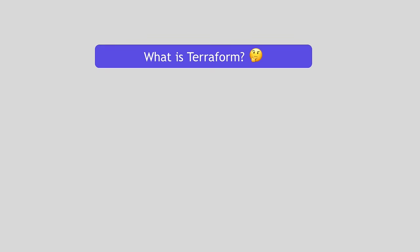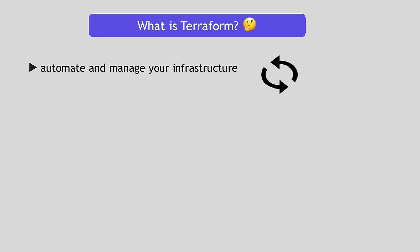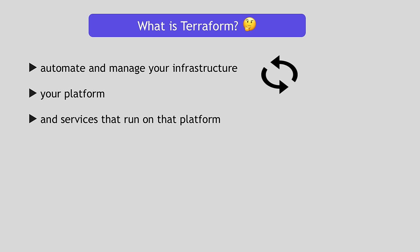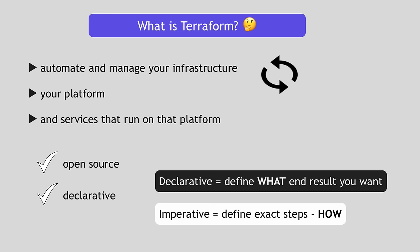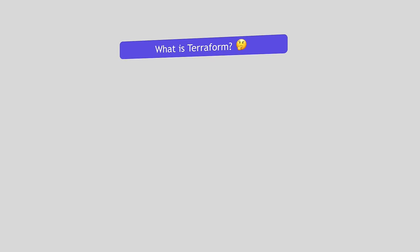Terraform allows you to automate and manage your infrastructure, your platform, and services that run on that infrastructure. It's open source and it uses declarative language, meaning you don't have to define every step of how this automation and management is done. You just declare what you want — the final end result — and Terraform will figure out how to execute it, versus imperative style where you specify how to execute each step. So Terraform is a tool for infrastructure provisioning.